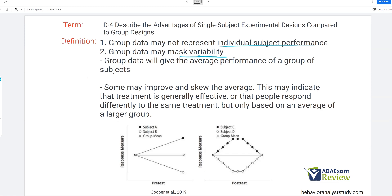49 of the participants may react how you expect. The one doesn't. Isn't that one person pretty interesting compared to the 49? Arguably, yes. And group data, though, there's a good chance we miss that. So we're getting more of the average performance of a group of subjects rather than each individual. So even if some improve and skew the average, we might not know that. It may indicate that treatment is generally effective for a sample of people, or that a sample of people respond differently to the same treatment, but really based on the average of a large group.